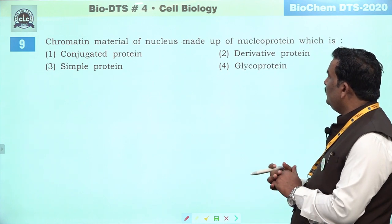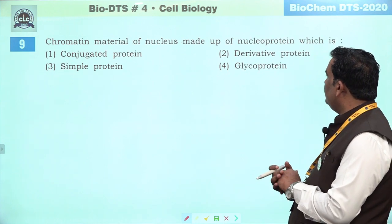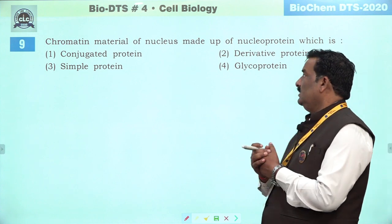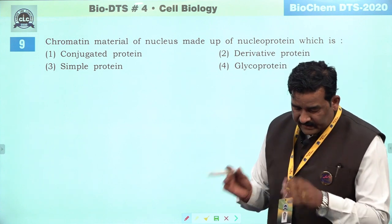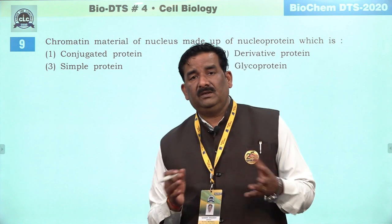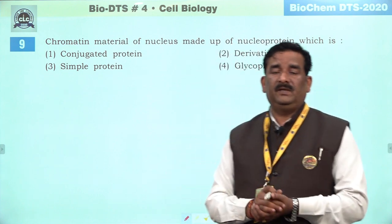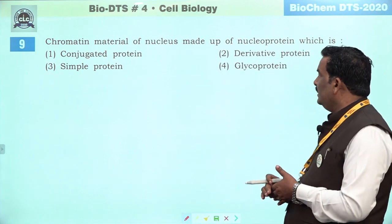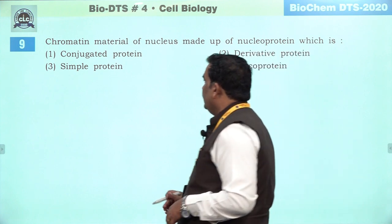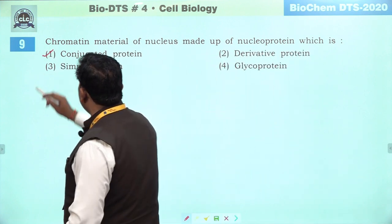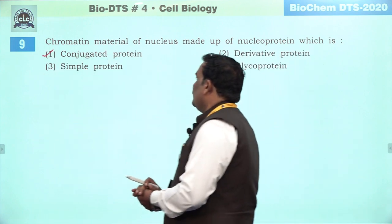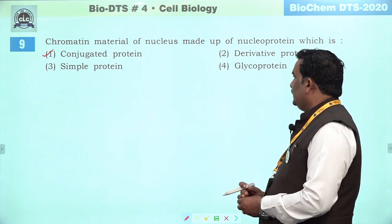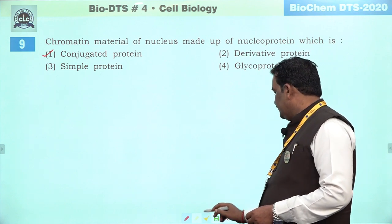Next question: chromatin material of the nucleus made up of nucleoprotein, which is — obviously nucleoprotein mein nucleic acid and proteins hota hai — histone hota hai, non-histone protein hota hai. Toh this is a conjugated protein. First is the right answer.